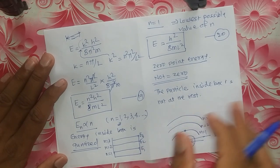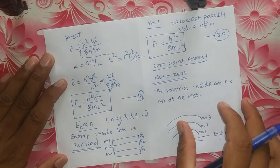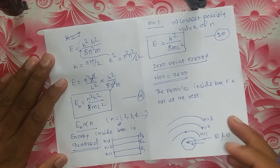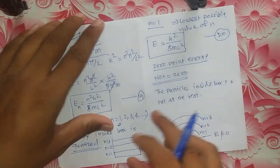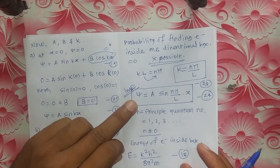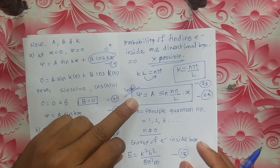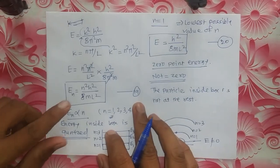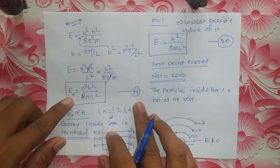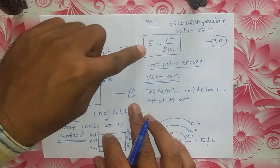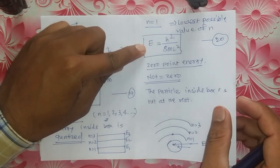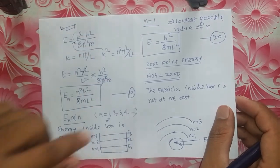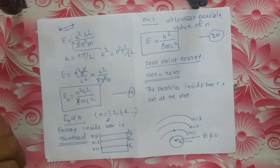So this is about the particle in a one-dimensional box. Here we calculated the wave function of the particle inside the box, the energy of that particle inside the box, and the lowest possible energy of that particle inside the box. Thank you very much.